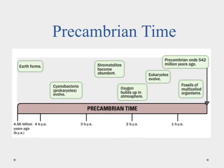When we're talking about Precambrian Time, what we're talking about is roughly the first 4 billion years the Earth has been in existence. So if we go back 4.56 billion years ago, we'll see that Earth formed. We had crustal formation occurring, we're starting to see the early atmosphere forming, oceans forming, and then we see life happening about 3.5 billion years ago.